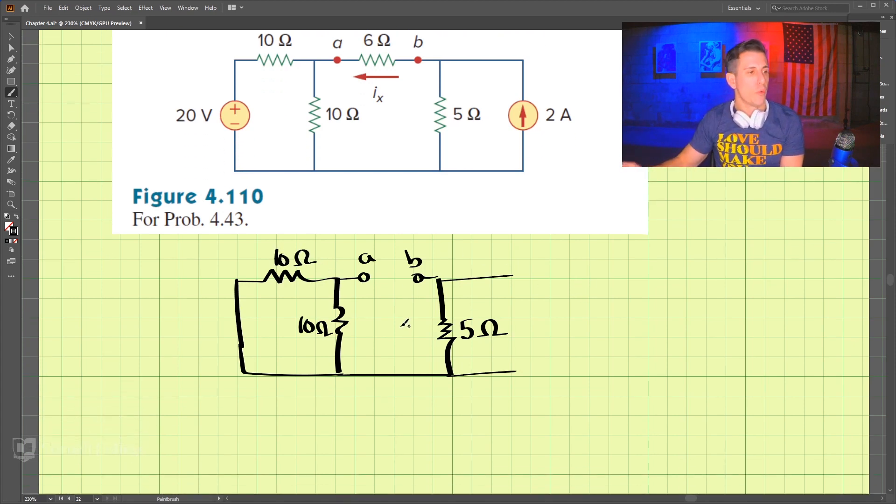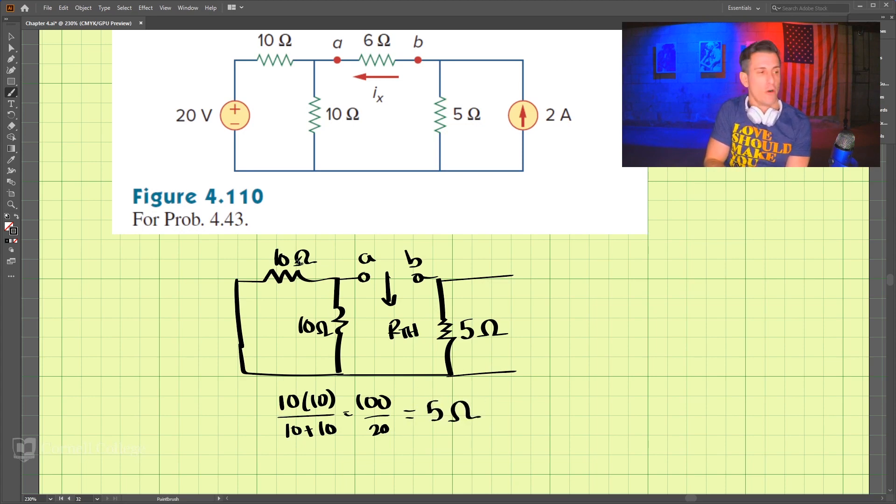Now between A and B, we are looking for the Thevenin resistance. Now 10 and 10 are in parallel. So adding those together, we have 10 times 10 divided by 10 plus 10, and that is 100 divided by 20, which comes out to 5 ohms combining these two.